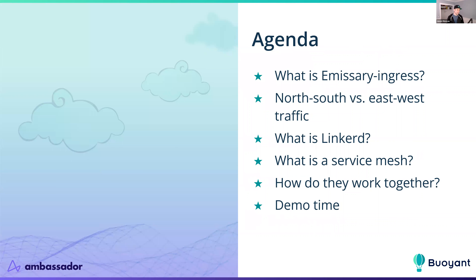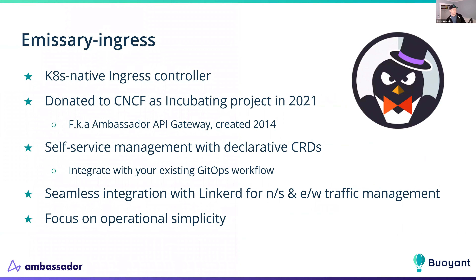Quick coverage of the agenda. You're going to get an insight into what Emissary Ingress is and why you ought to consider using it. We're going to talk about traffic and some terms that get used a lot, like north, south, east, and west. I'll tell you about Linkerd, and we're going to see how they all work together and what's the level of difficulty to get these things integrated — spoiler alert, it's pretty darn low. With that, I'm going to hand it over to Daniel.